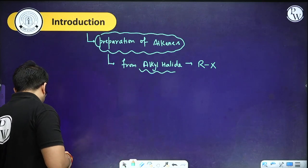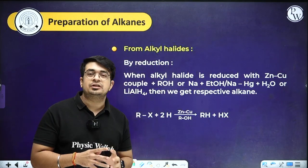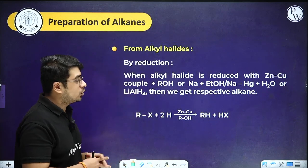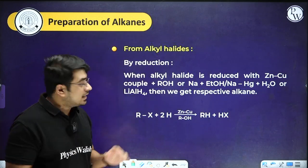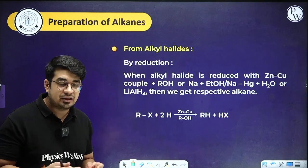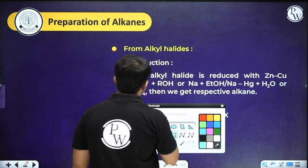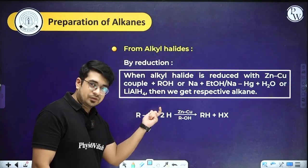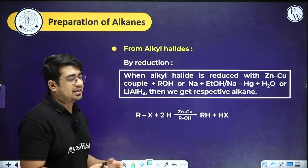We are going to start with the preparation by reduction of alkyl halide. You can use different types of reducing agents: either zinc-copper couple with ROH, Na plus EtOH, Zn/Hg couple with H2O, or LiAlH4. All are basically reducing agents and they provide H to the system. In this scenario, whatever alkane you are preparing, there will be no chain increment — the carbon atoms remain the same. The reaction is simple: alkyl halide with hydrogen provides RH, your simple alkane, as well as HX.